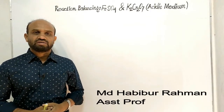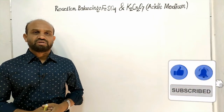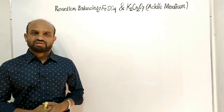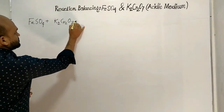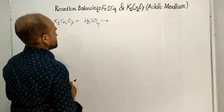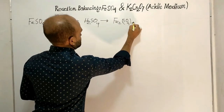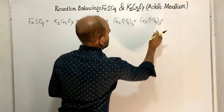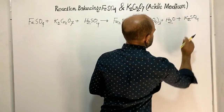Today's lesson is reaction balancing through oxidation and reduction reactions in acidic medium. The reaction is between ferrous sulphate and potassium dichromate. In acidic medium, sulphuric acid is added. The products are: ferrous sulphate turns into ferric sulphate, potassium dichromate chromium turns into chromic sulphate, and then water and potassium sulphate are also formed.